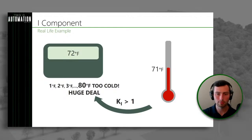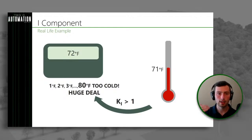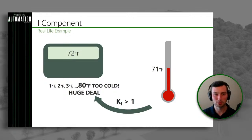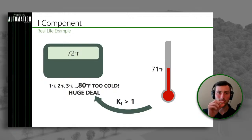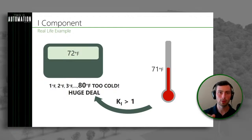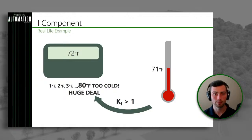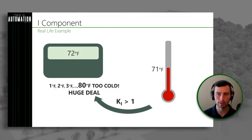Now let's look at what would happen if we had an I component introduced. We have it set to 72 degrees, it's actually 71. With some integral gain, that one degree is going to turn to two degrees, then three degrees, then four degrees. All of a sudden we have something telling us we're way too cold — it's 80 degrees too cold — because we've got this small error building up over time. That's what the integral component does: it looks at the history of the error and accumulates it over time. It's great for steady state error, but can introduce oscillations and other issues.